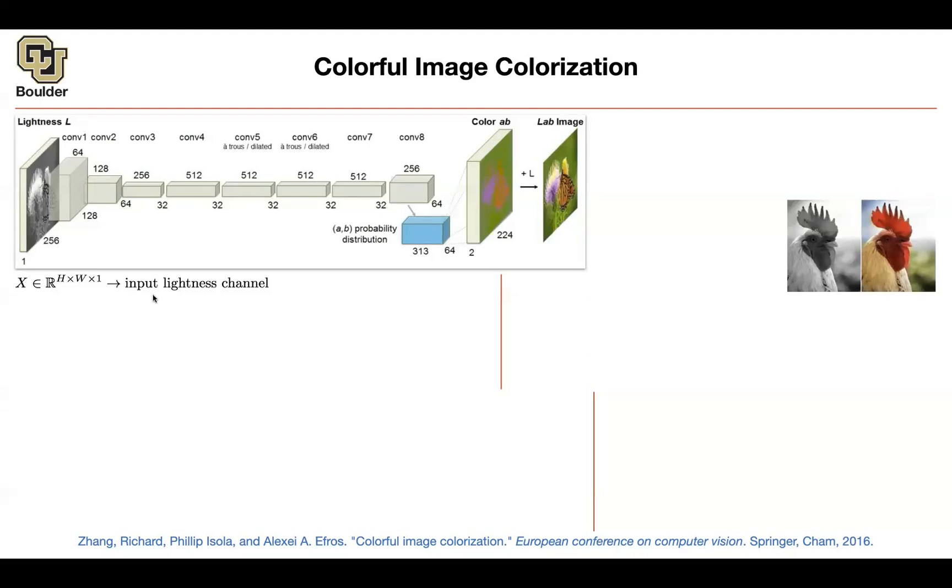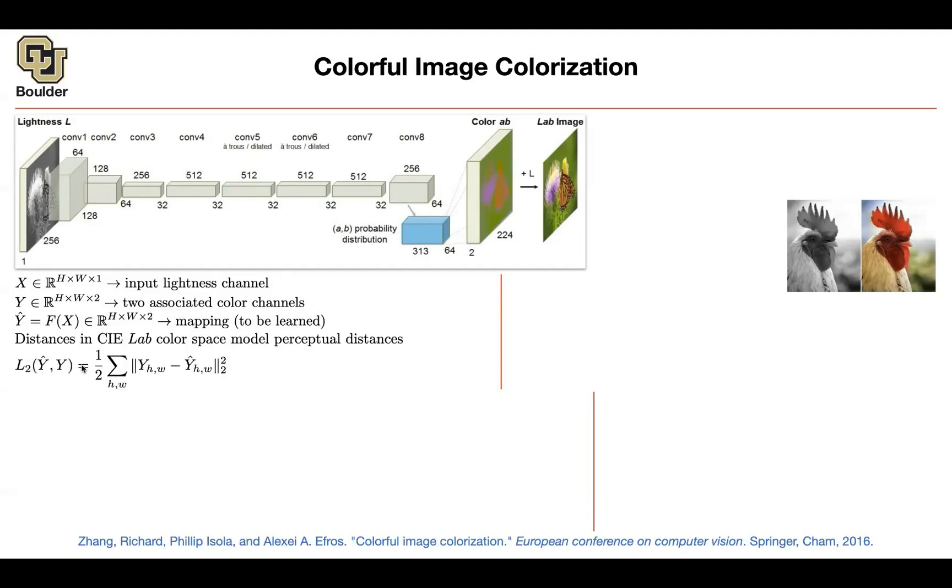You have some inputs. It has only one channel. And you want to get the rest of the channels out, the colors. So you want to associate two colors per each pixel. So it's a per-pixel prediction task. What you can do is you can take X, push it through a neural network, and F is a mapping that you need to learn. And that's going to give you the prediction of your model. And then you can look at the distances.